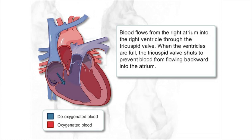Blood flows from the right atrium into the right ventricle through the tricuspid valve. When the ventricles are full, the tricuspid valve shuts to prevent blood flowing backward into the atrium.